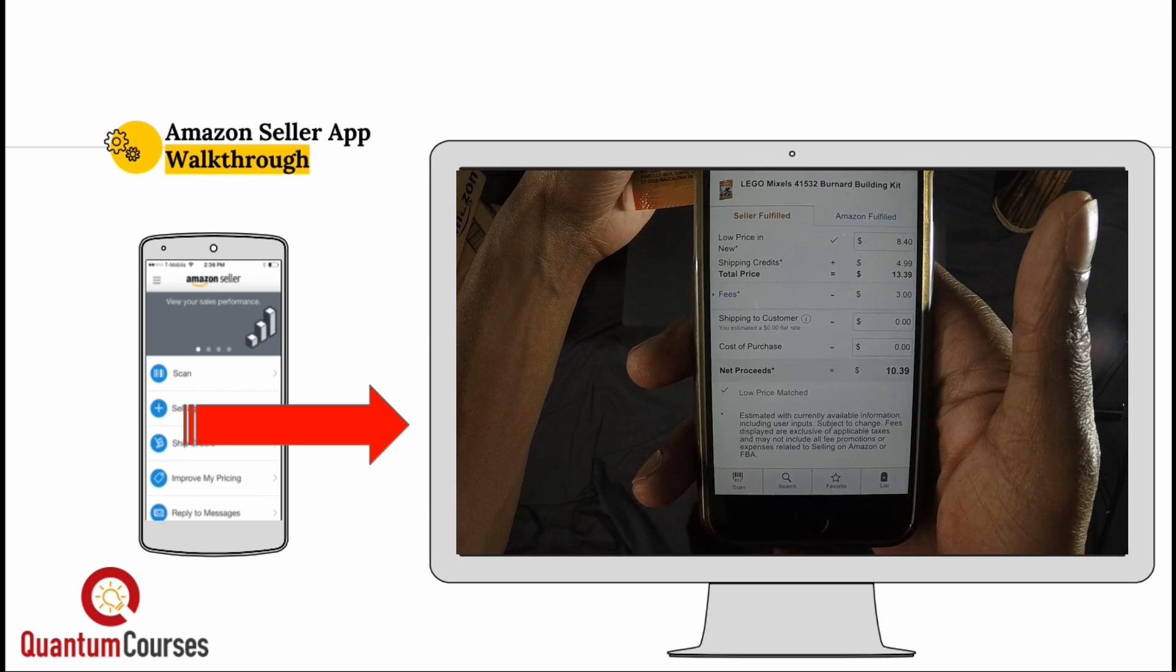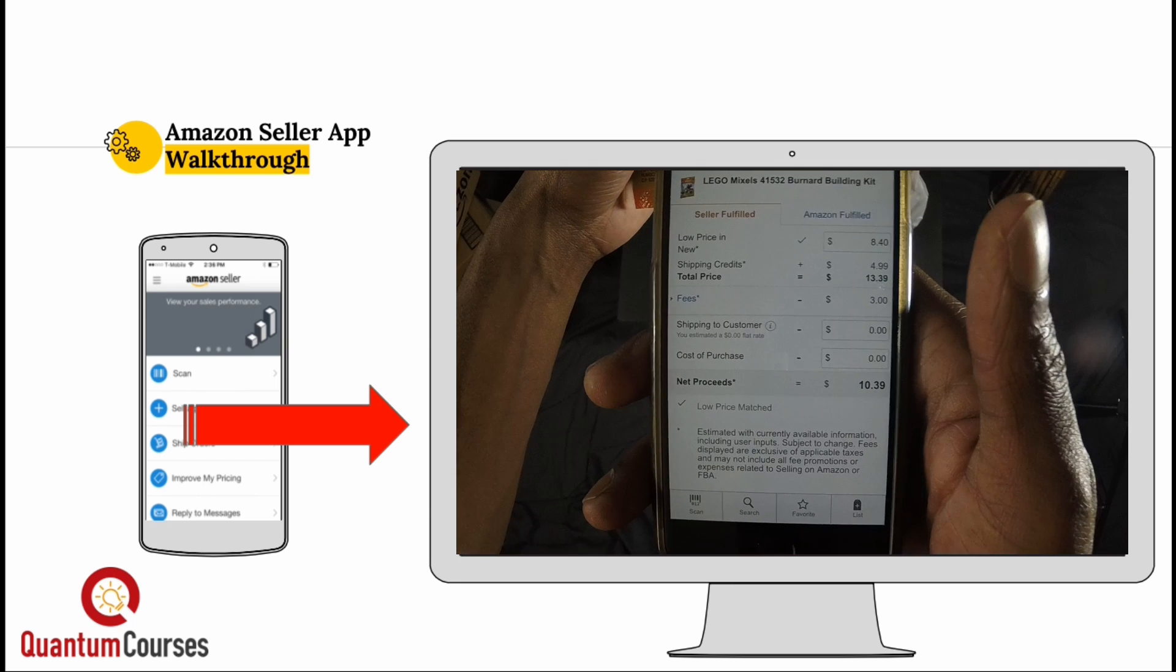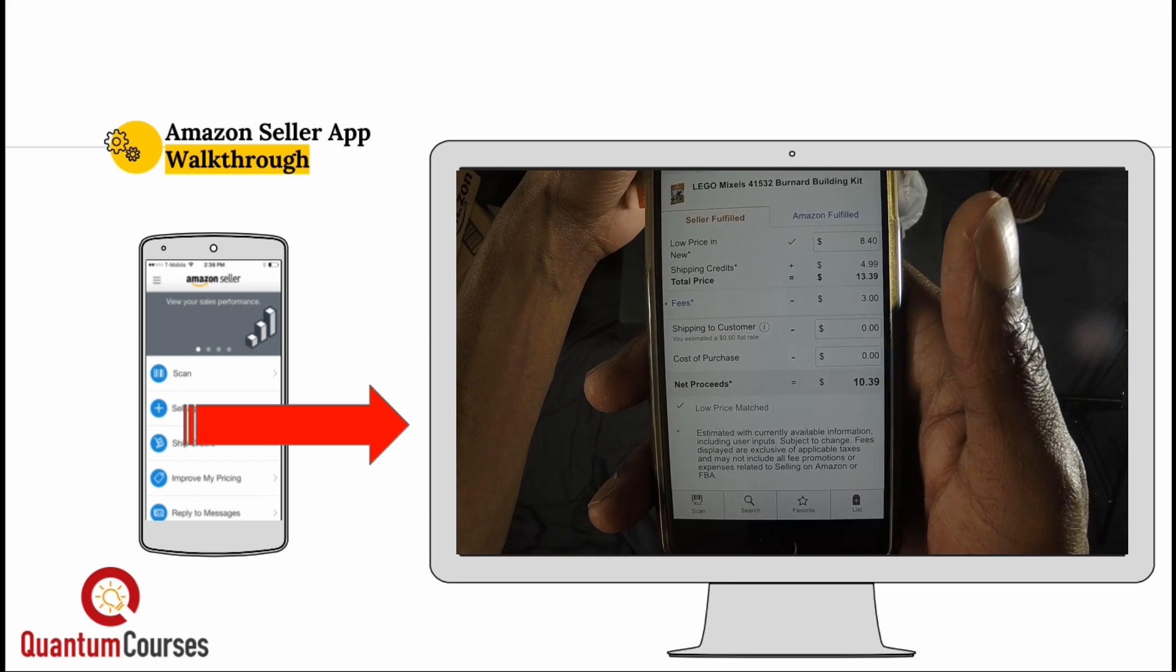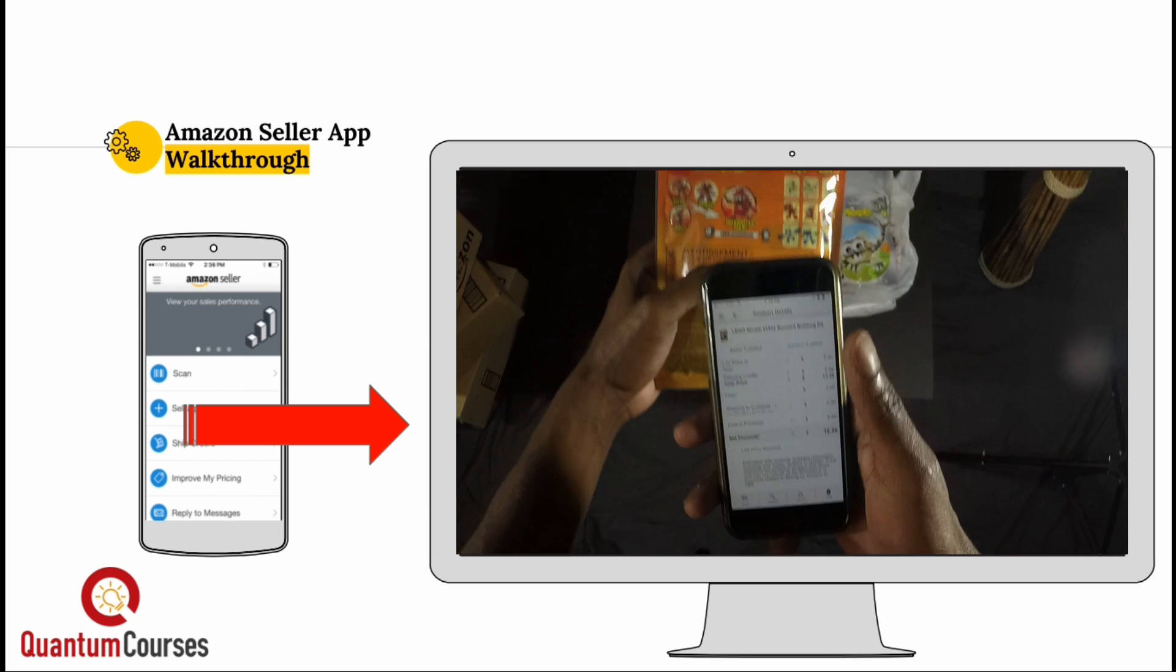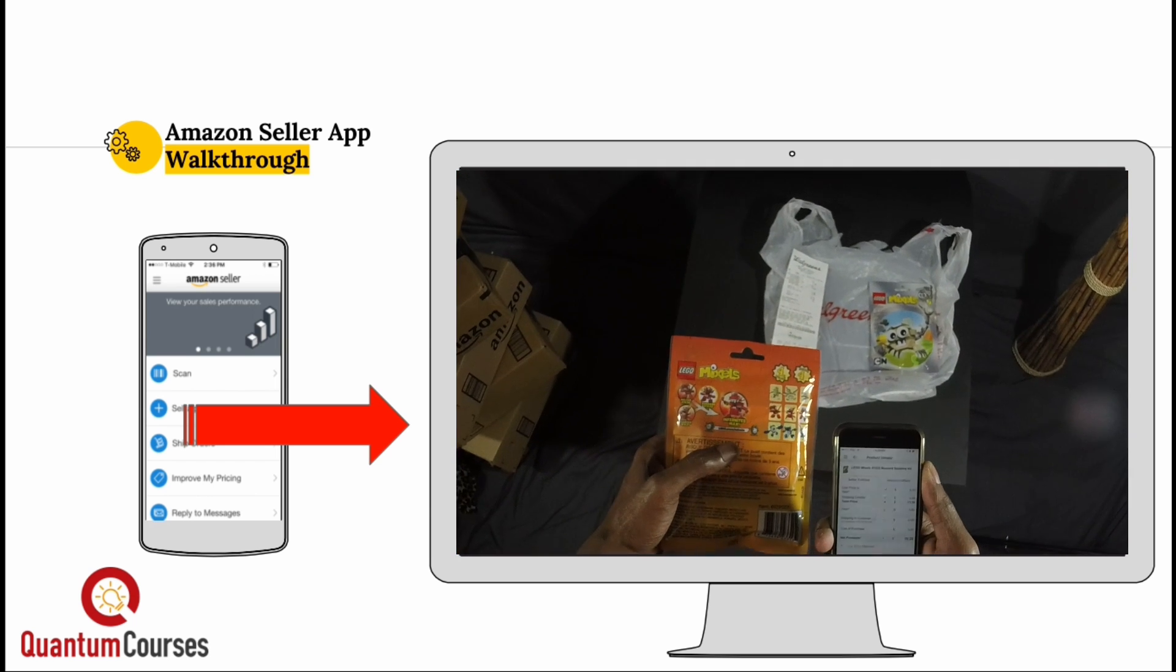According to the app, I would get paid $10.39 from Amazon after all fees are applied. So I would make a little over $5 each for these two items.